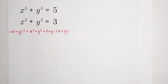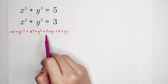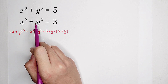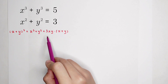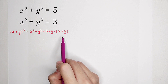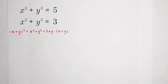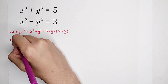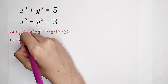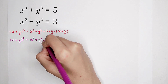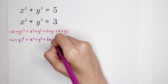Our second formula gives the relationship among x squared plus y squared, x plus y, and x times y. Our goal is to express x cubed plus y cubed and x squared plus y squared in terms of xy and x plus y — the sum and product of x and y. The second formula is: x plus y, all squared, equals x squared plus y squared plus 2 times xy.